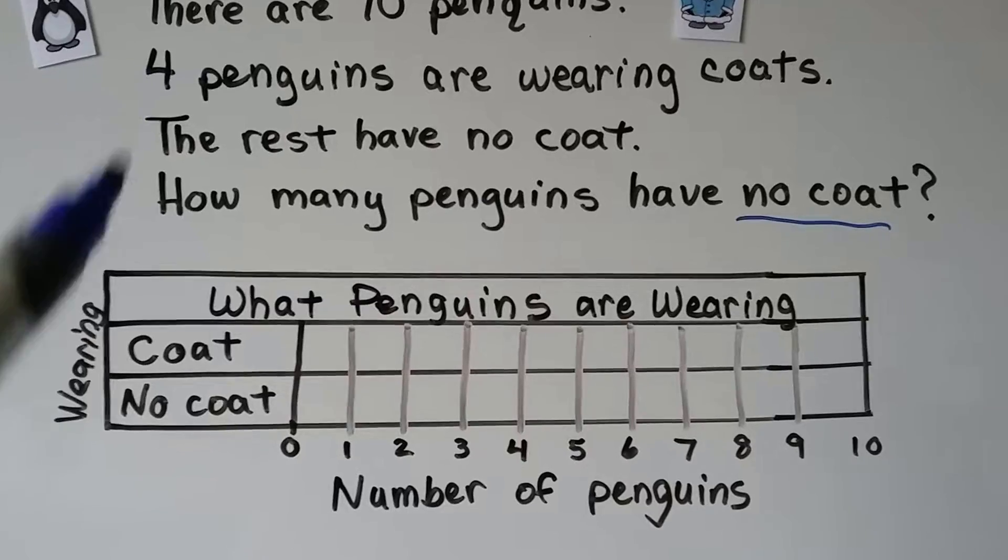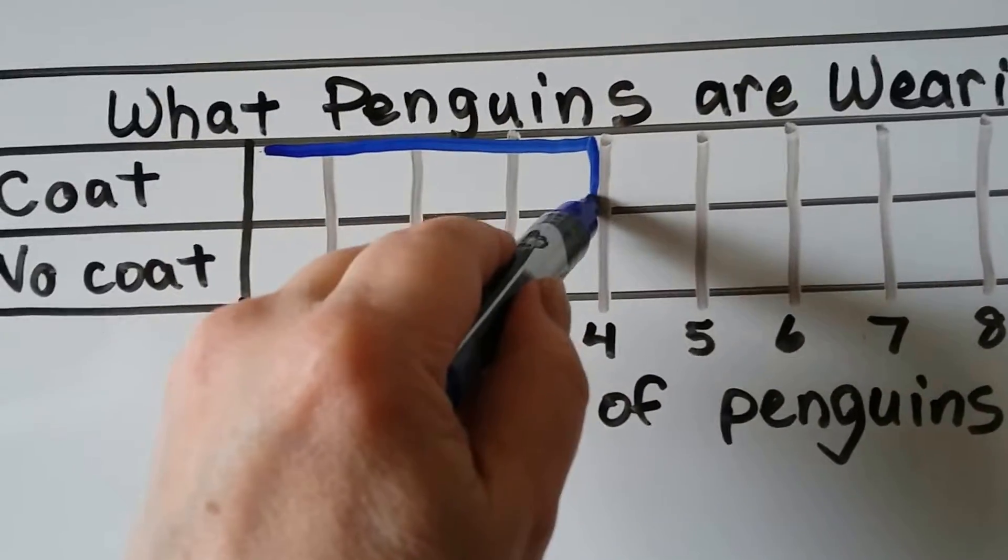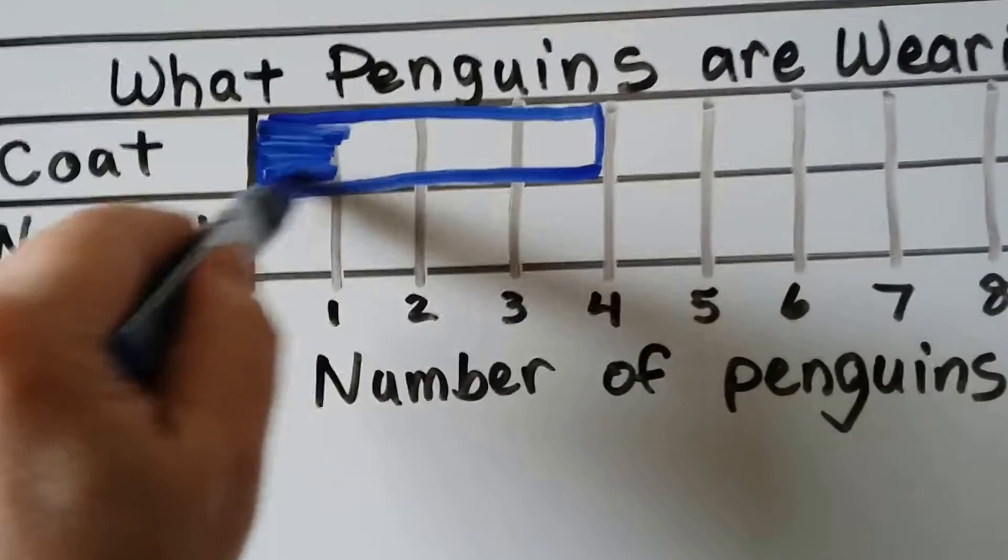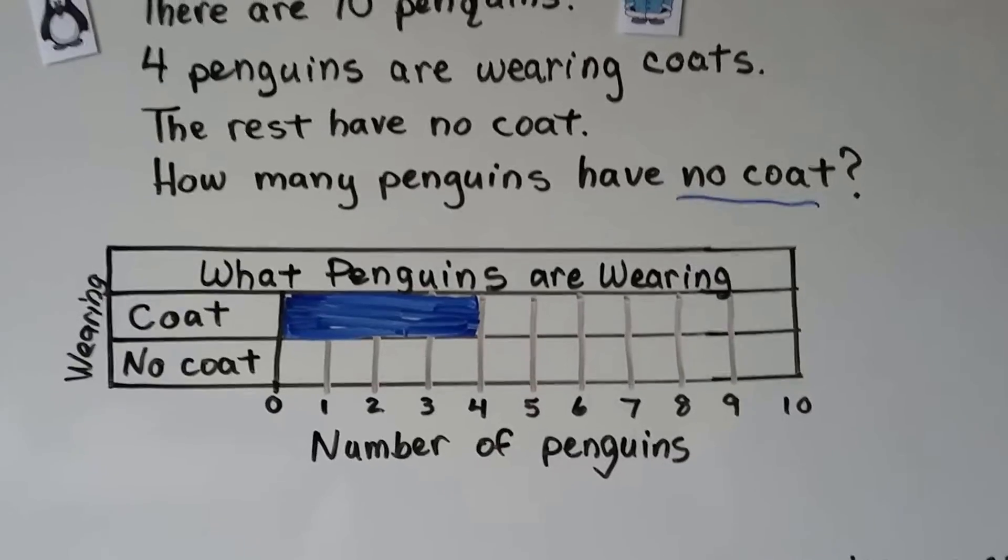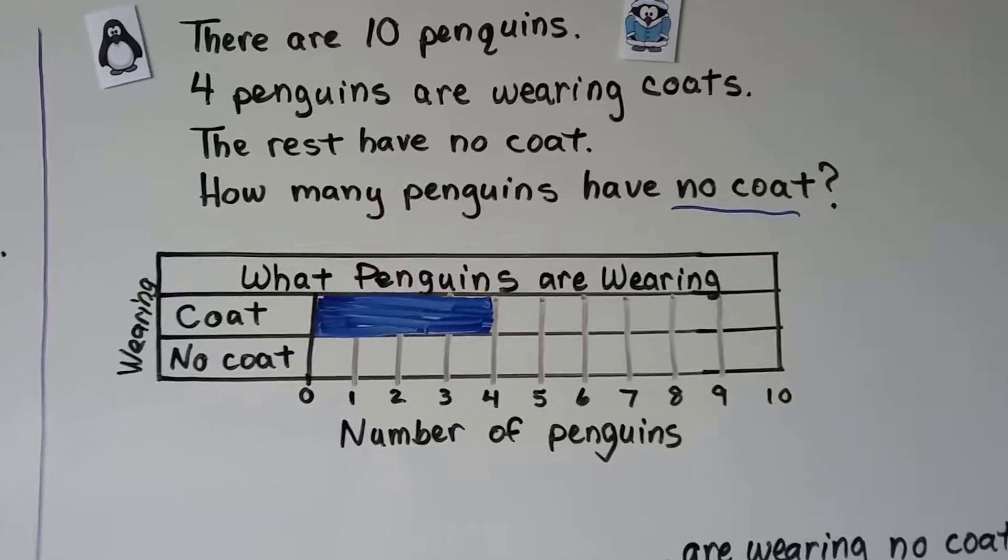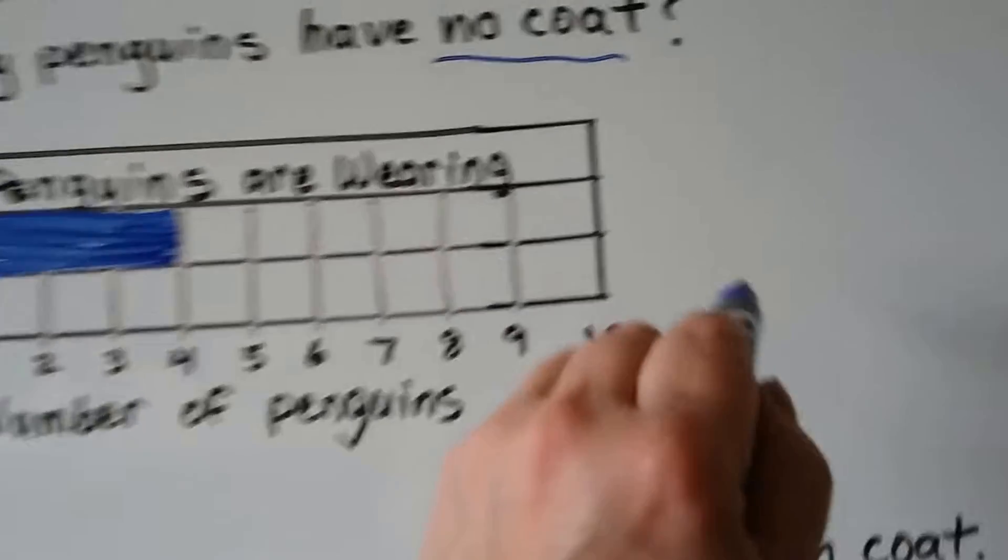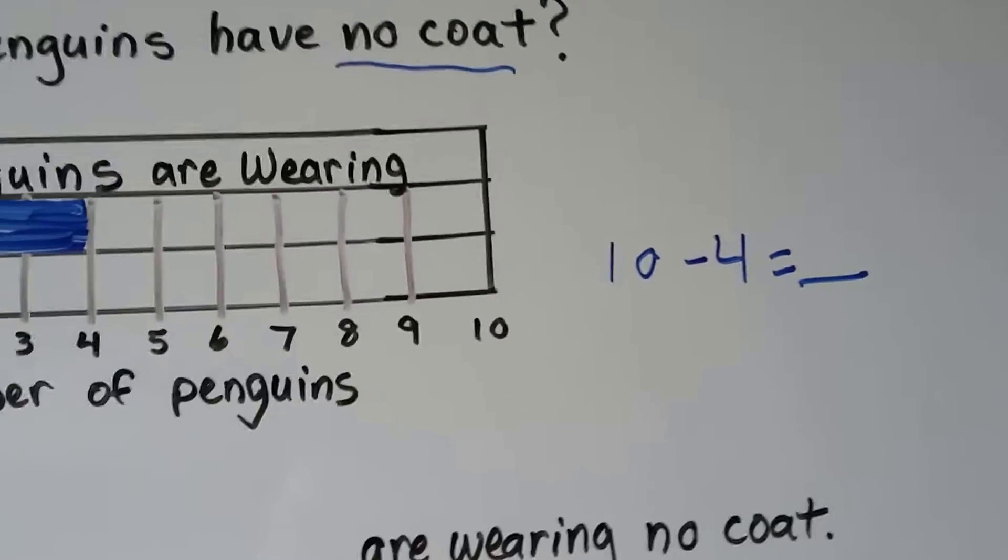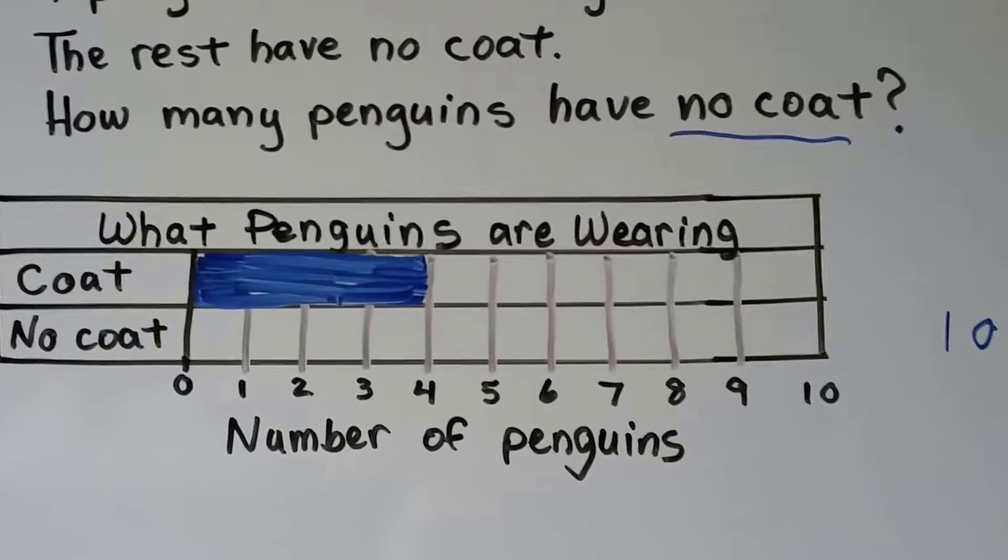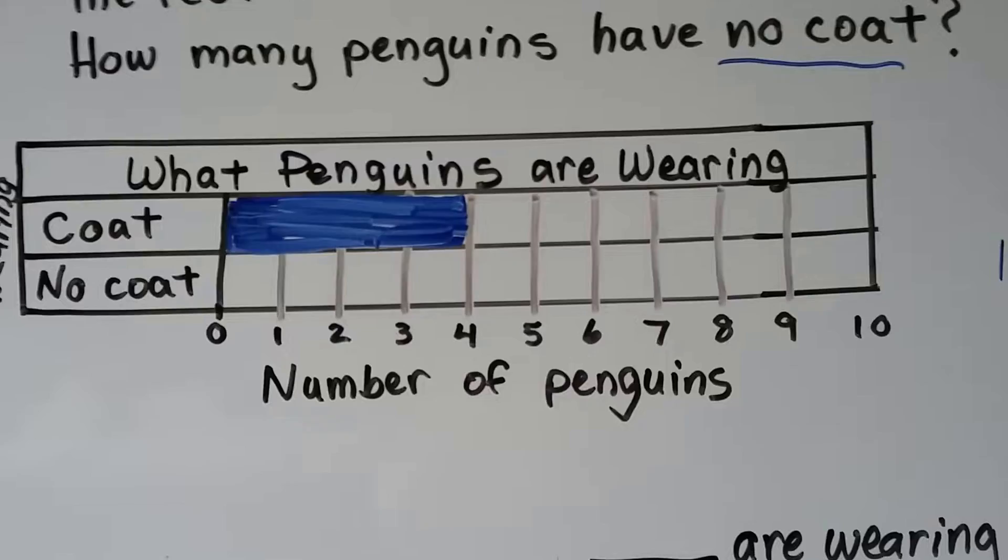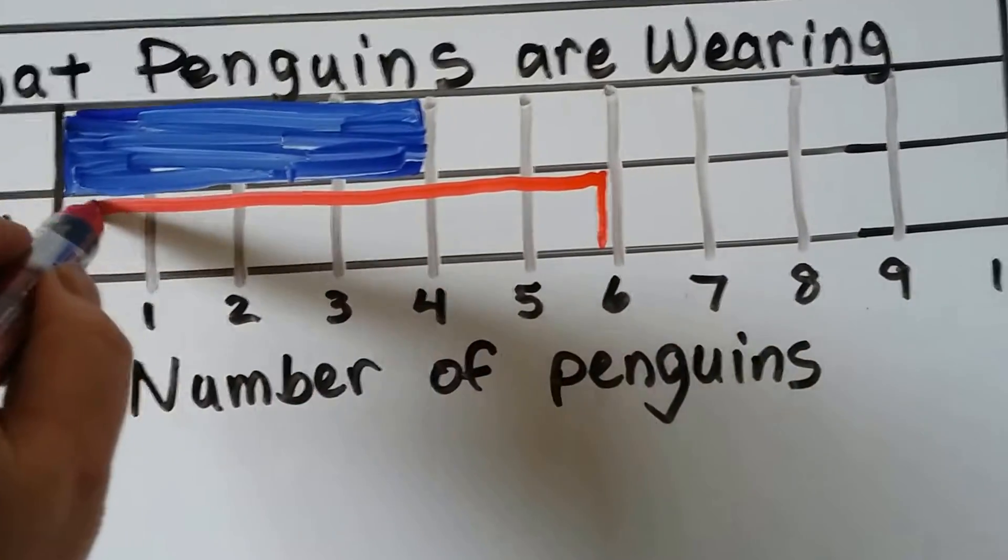It says four penguins are wearing coats. So here's the coat label. Let's fill in four for they have coats. So our bar is going to go up to the four, isn't it? Because four are wearing coats. The rest have no coat. Well, it tells us there's ten penguins. So if there's ten, how many are wearing no coat? Well, it would be the difference between the four and the ten, wouldn't it? We could actually do ten minus four to get the answer. We can also count the squares to ten. One, two, three, four, five, six. So six have no coat. So we can fill in the bar for no coat with six. So it's going to go up to here, isn't it? It's going to stop there for six. We can make our bar.